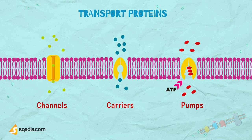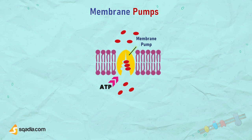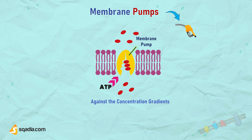Starting off with membrane pumps. The word pump probably conjures up thoughts of using energy to pump up the tyre of a bicycle or a basketball. Similarly, energy is required for these membrane proteins to transport substances, molecules, or ions across the membrane, usually against their concentration gradients — from an area of low concentration to an area of high concentration. These enzymes use energy from adenosine triphosphate (ATP), light, or rarely other sources. Pumps are also called primary active transporters.